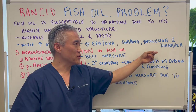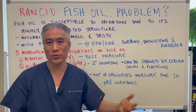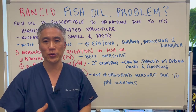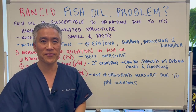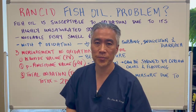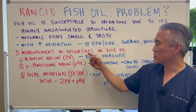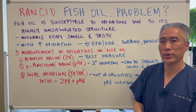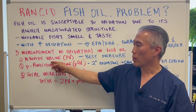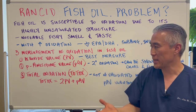Interestingly, these three symptoms are also related to issues with the gallbladder, where you can't digest fats appropriately. So what are the three measurements for oxidation in fish oil? One is called peroxide value, or PV.